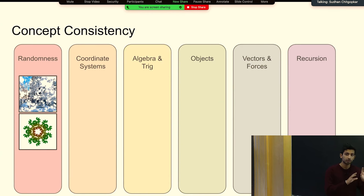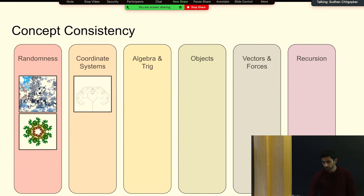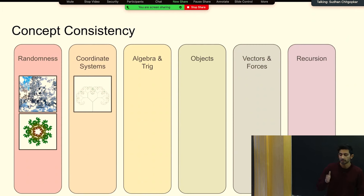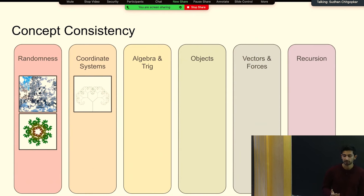Once you understand randomness, there's a lot that you can do with it. One concept that is really integral regardless of what pattern you're visualizing is the coordinate system and how to manipulate coordinate systems, especially in Processing, to make your life easier. The first time we talked about coordinate systems rigorously was through our fractal tree — we were pushing and popping matrices and moving our coordinate system around a lot. That turned the process of making a fractal tree into something extremely simple. Instead of having to worry about drawing a bunch of different branches, we only had to worry about drawing one line, one branch.